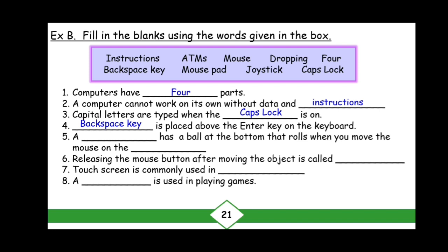Number five: A mouse has a ball at the bottom that rolls when you move the mouse on the mouse pad. Number six: Releasing the mouse button after moving the object is called dropping. Number seven: Touch screen is commonly used in ATMs. Number eight: A joystick is used in playing games.